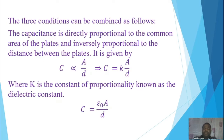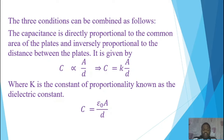Combining the three factors: capacitance is directly proportional to the common area of the plates and inversely proportional to the distance between them. So C ∝ A/D, which implies C = KA/D, where K is the constant of proportionality known as the dielectric constant. Replacing K with the dielectric constant gives C = ε₀A/D, where ε₀ is the dielectric constant.